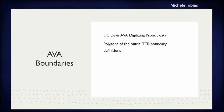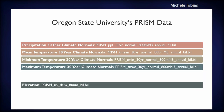Now I'll talk about the methods, starting with the input data. To get the boundaries, I mentioned they're narratives in text form in federal government documents. Fortunately, over the last five and a half years at UC Davis we've been able to spend time digitizing these and making actual polygons usable in a GIS. These are polygons of the official TTB boundary definitions.